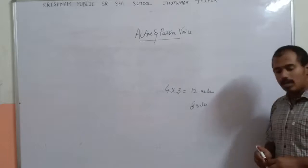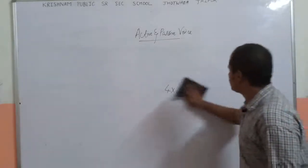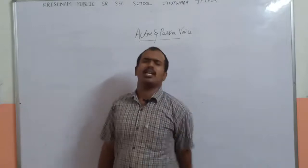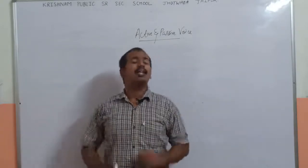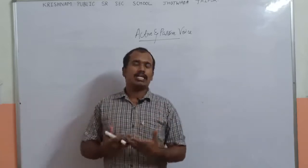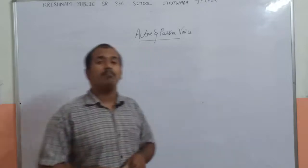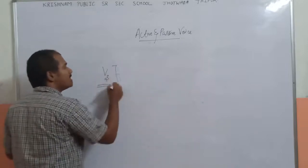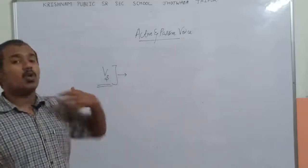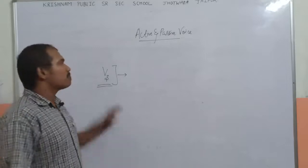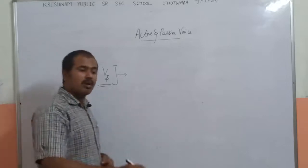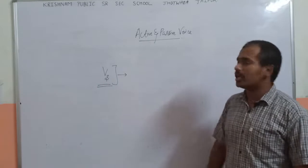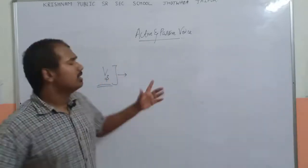Now let us begin. What is active and passive voice? In an active sentence, whatever the speaker has said, when that very sentence is repeated in passive form, it is referred to as passive voice. One benefit in active and passive voice is that throughout the entire topic we are just supposed to use verb's third form. I will try to complete this entire topic in this very lecture only.